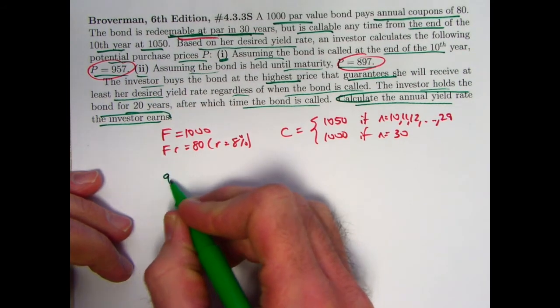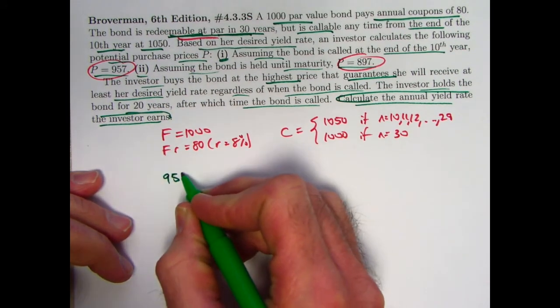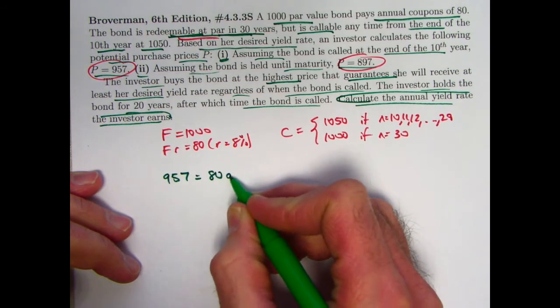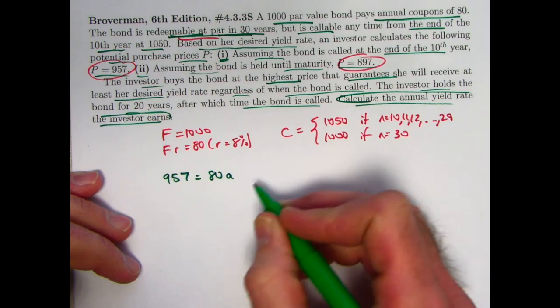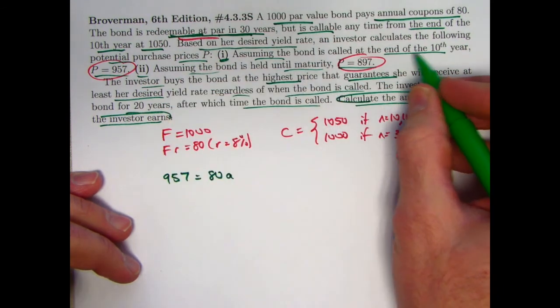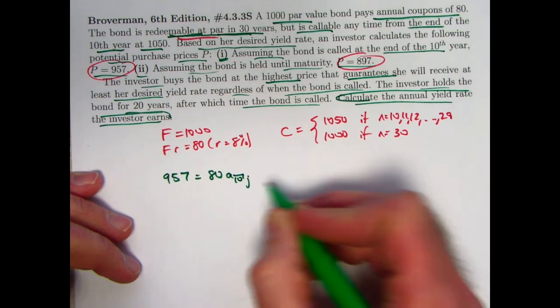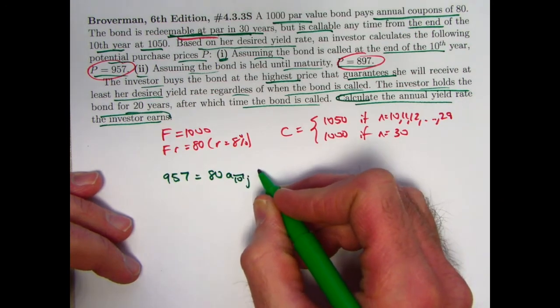I'm going to go ahead and write down the basic formula here. The price is F times R, which is 80, times A based on when the bond is called, 10, and some unknown yield rate J, plus,